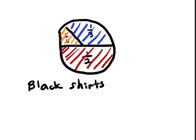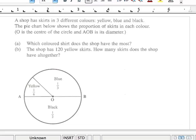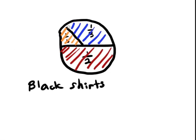Black shirts. Now here comes the second part. This one is very typical of all PSLE foundation math questions. It says the shop has 120 yellow skirts. How many skirts does the shop have all together? Let's look at this again. The shop over here has 1 over 6 yellow skirts.